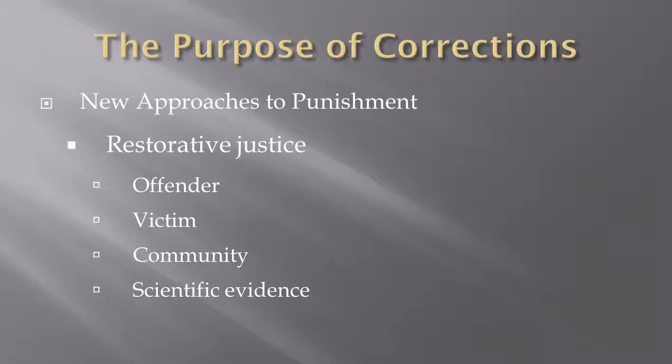Our primary goal in the criminal justice system is to reduce victimization and ensure public safety. As part of these new approaches, we're seeing a greater and greater reliance on science — looking at those correctional interventions and practices that bring about the most change in affected populations, that reduce recidivism, and that enable us to address even the most severe crime patterns. We need to embrace what has been proven over time to have the greatest impact and is the best use of our resources.